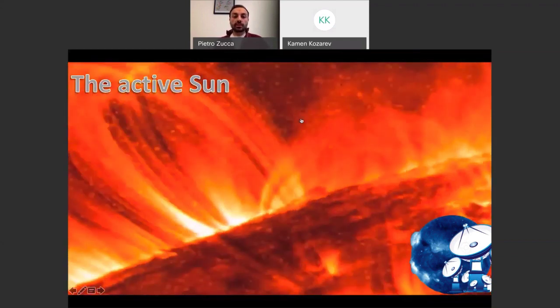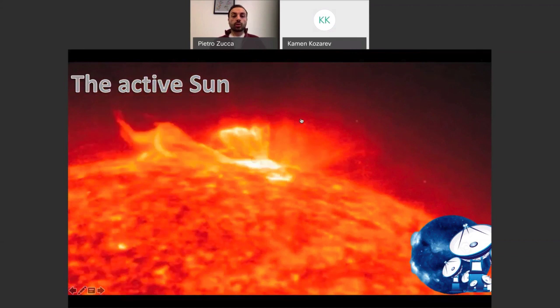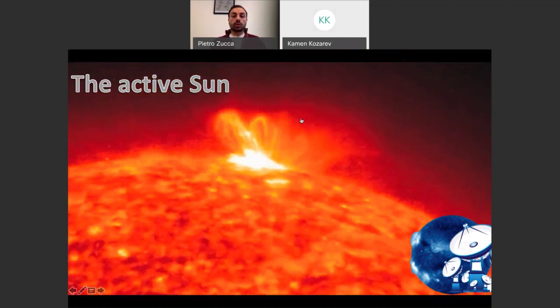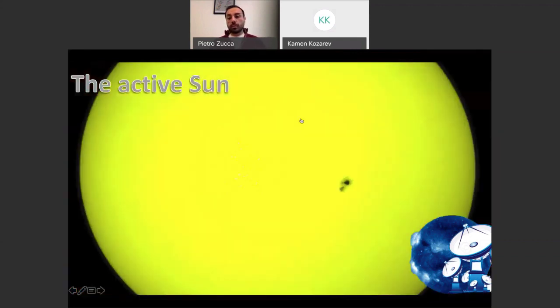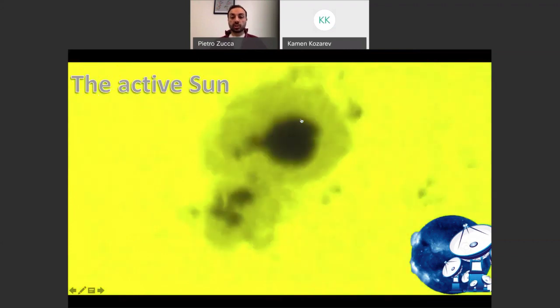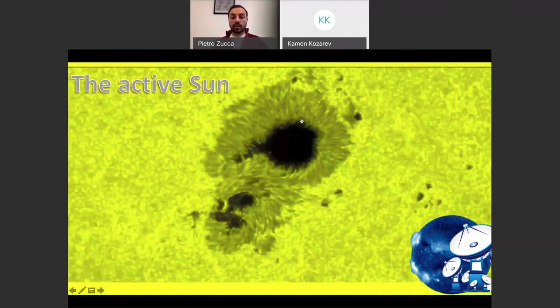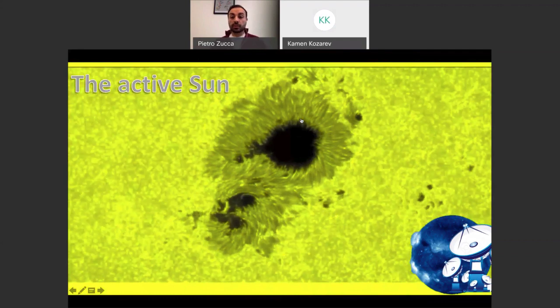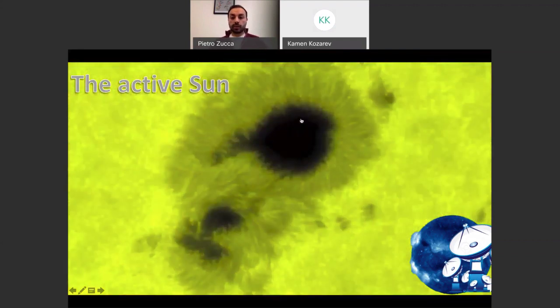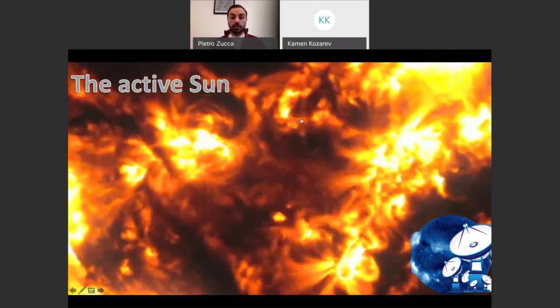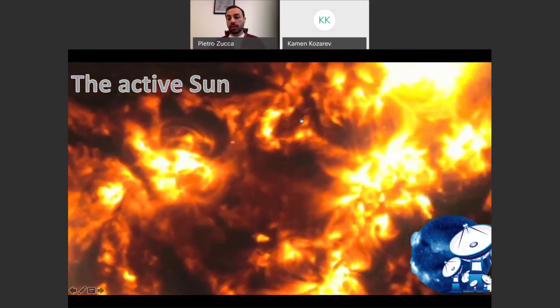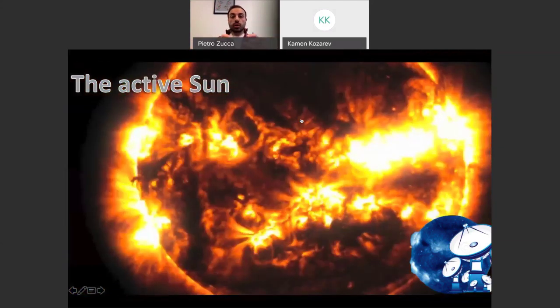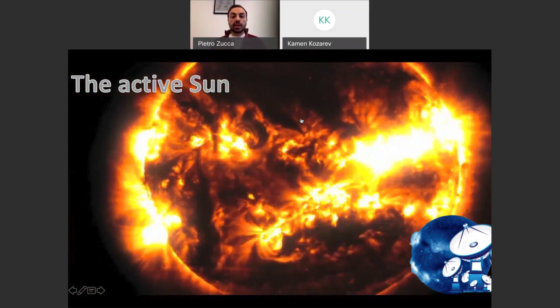What you can see here in these animations are what we call loops or magnetic containers that generate from sunspot regions where the magnetic field is very strong. They appear darker at certain wavelengths, but on top of them we have magnetic loops that contain hot gas that is constantly firing and developing.